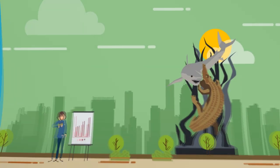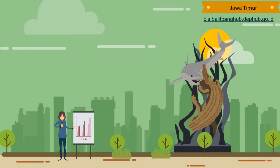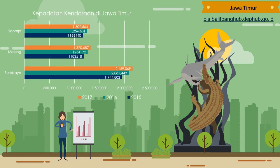Menurut data pada Departemen Perhubungan di Jawa Timur, terdapat tiga kota besar yang memiliki kepadatan kendaraan sangat padat. Yang utama yaitu Surabaya, dari 1,9 juta menjadi 2,1 juta pada tahun 2017. Kedua, Kota Malang, dari tahun 2015 adalah 118 ribu menjadi 1,3 juta pada tahun 2017. Dan Sidoarjo, 116 ribu menjadi 1,3 juta pada 2017.